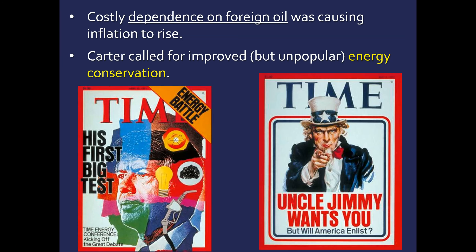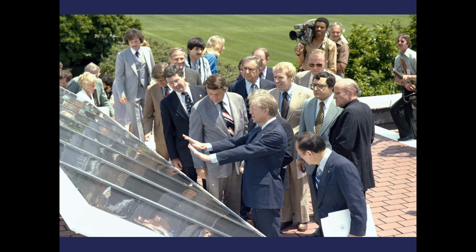Carter said we need to work on energy conservation to make the energy we have stretch further. He suggested setting your AC at 75 in the summer instead of 70, or your heat at 65 in the winter. But these calls were very unpopular — Americans did not want to cut back; they wanted to consume like they always had. Carter also had solar panels placed on the roof of the White House, symbolic of what he wanted to see across America: a shift from traditional fuel sources to something new.